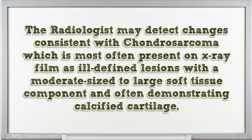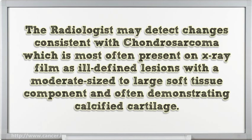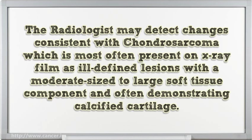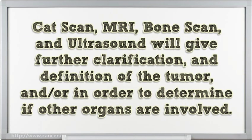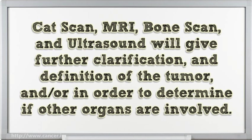The radiologist may detect changes consistent with Chondrosarcoma, which is most often present on X-ray film as ill-defined lesions with a moderate-sized to large soft tissue component, and often demonstrating calcified cartilage. CAT scan, MRI, bone scan, and ultrasound will give further clarification and definition of the tumor, and to determine if other organs are involved.